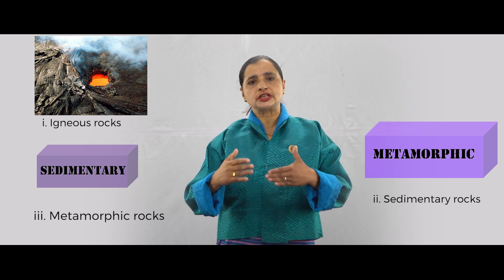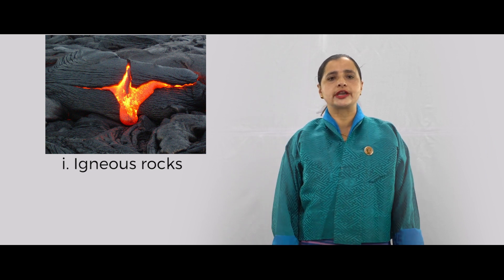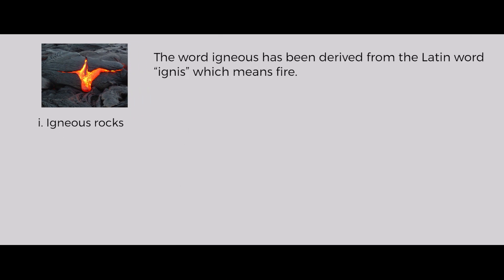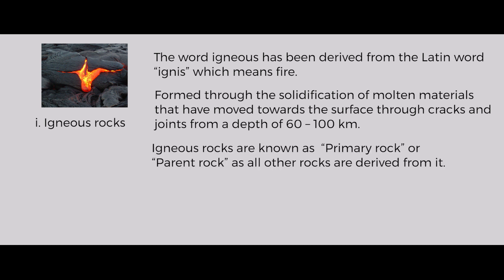Now let us move a little deeper into the lesson. We are going to classify igneous rocks into various types. The word igneous has been derived from the Greek word 'igneous' which means fire. So igneous rocks are formed by solidification of molten magma below the surface and lava on the surface. The word solidification here means cooling.